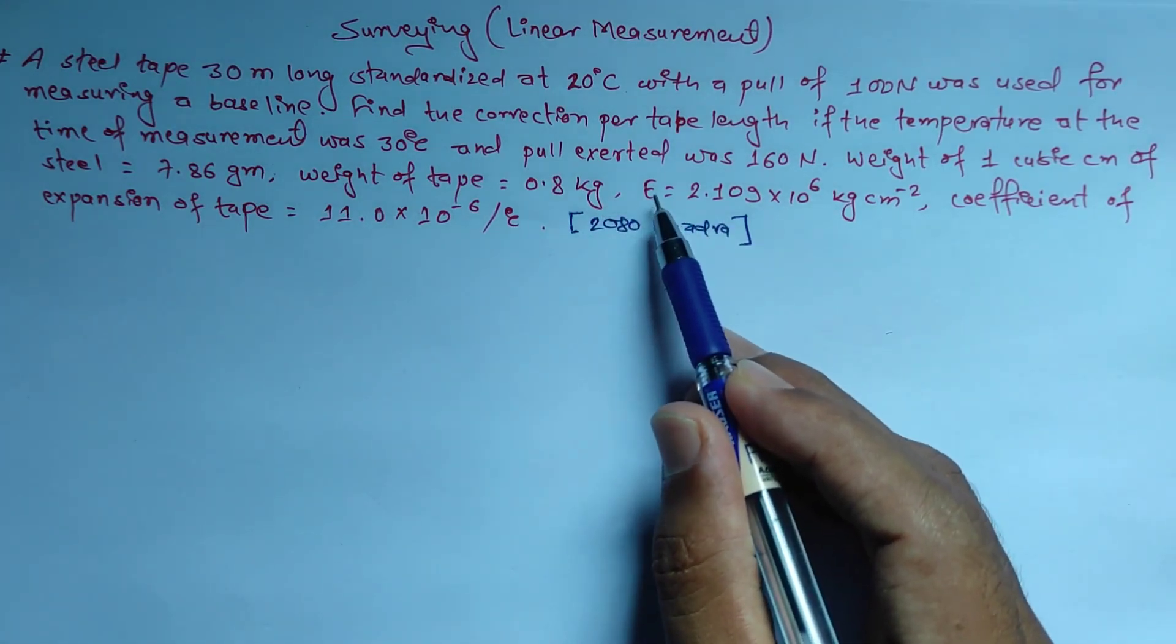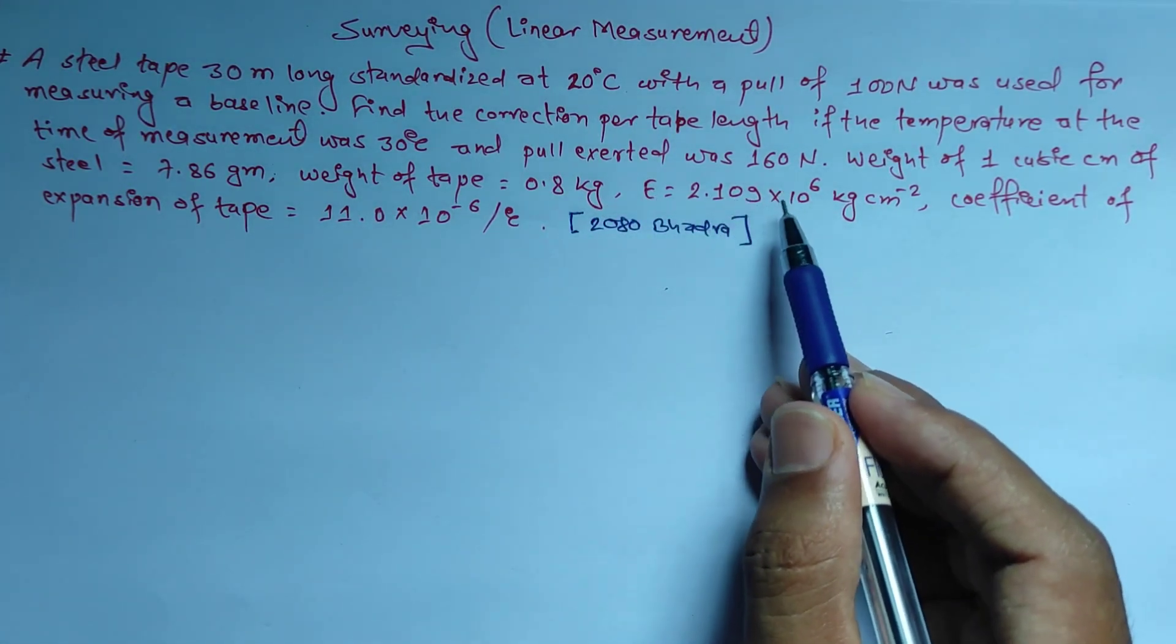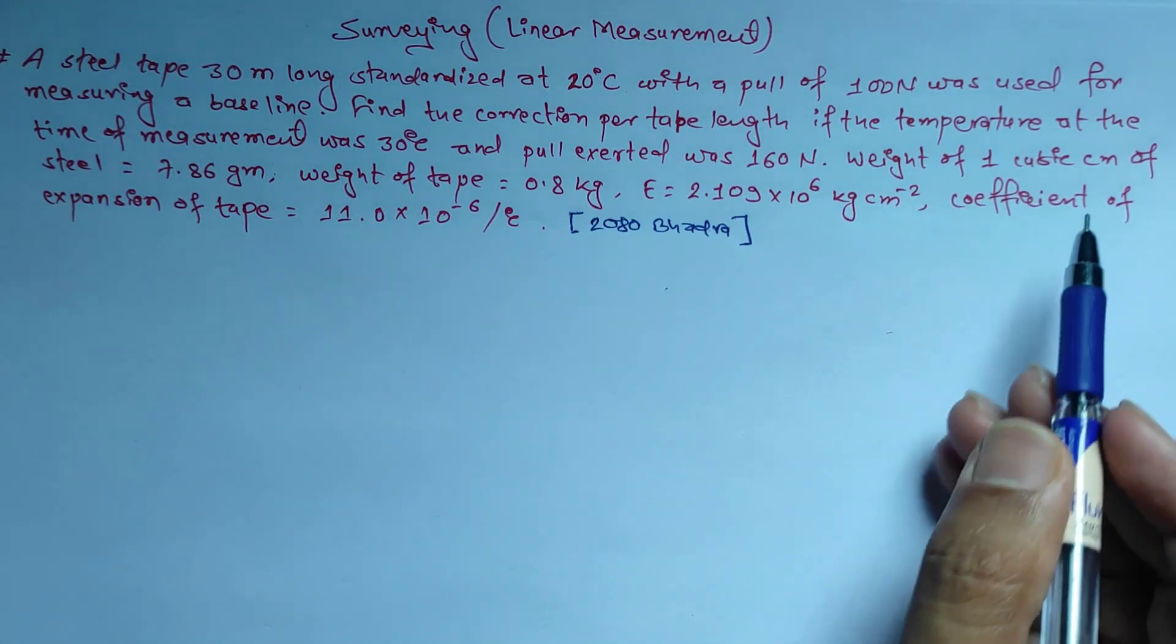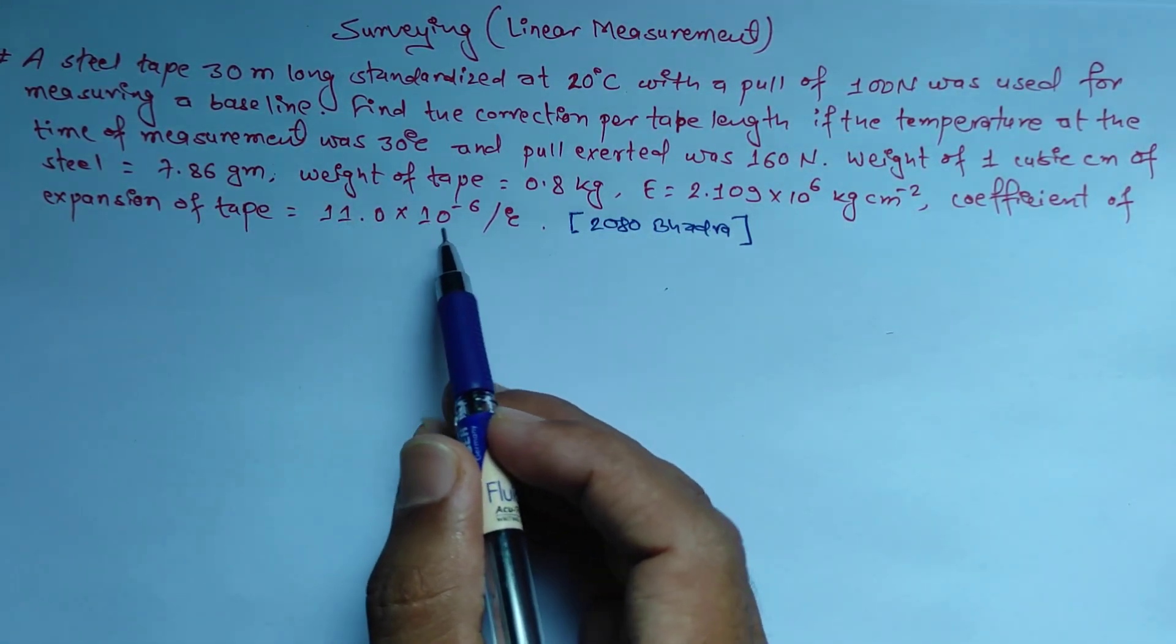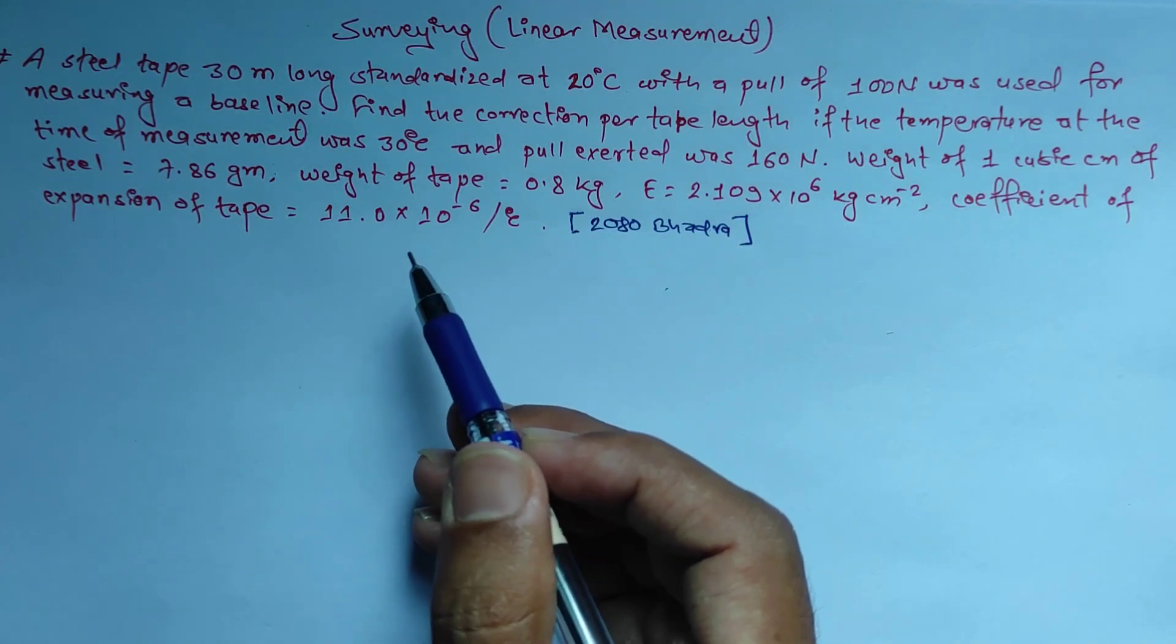Also given: modulus of elasticity 2.109 into 10 to the power 6 kg per cm square, coefficient of expansion of tape 11 into 10 to the power minus 6 per degree Celsius.